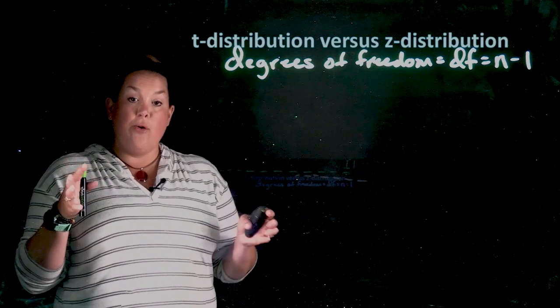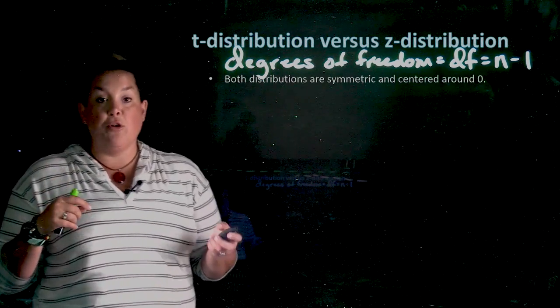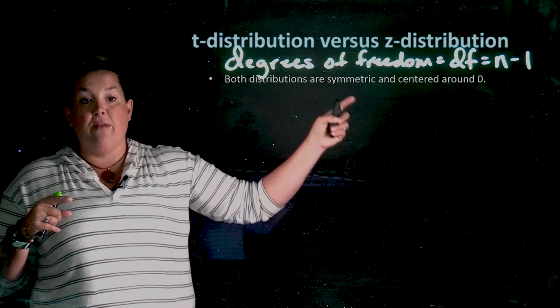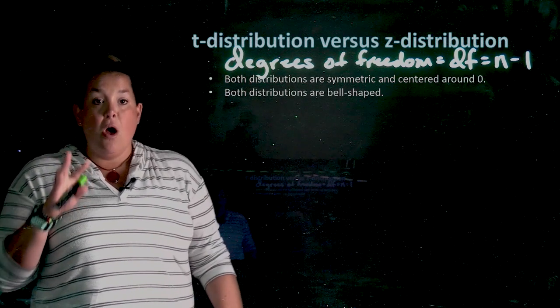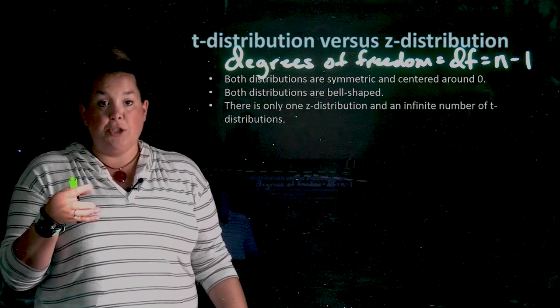So let's write out those similarities and differences. When you compare the two, remember we said that both distributions are symmetric and centered around zero. Both distributions are bell-shaped.